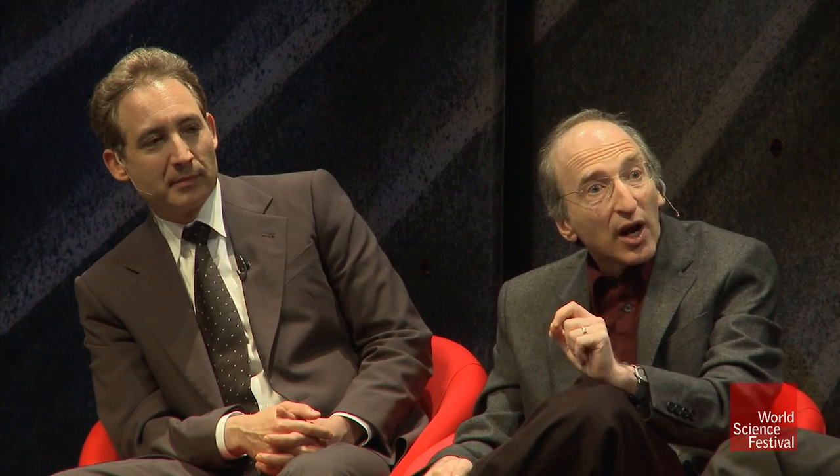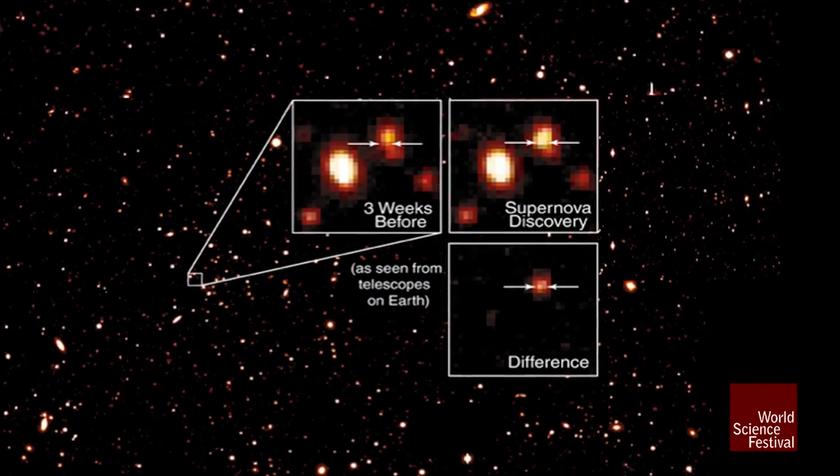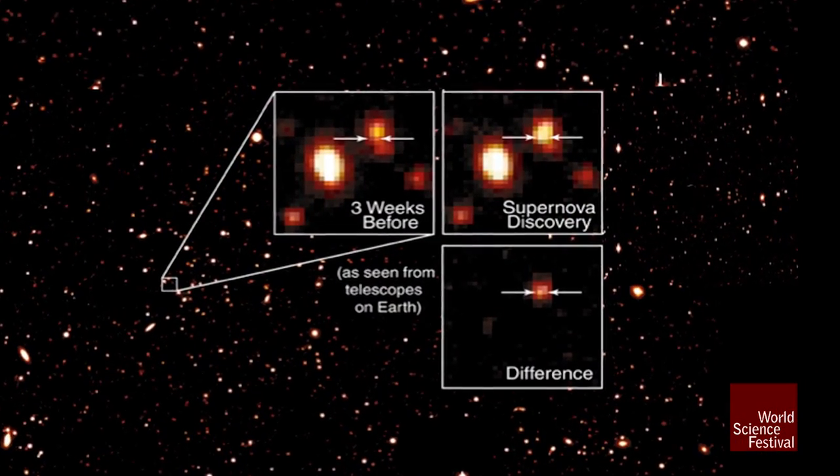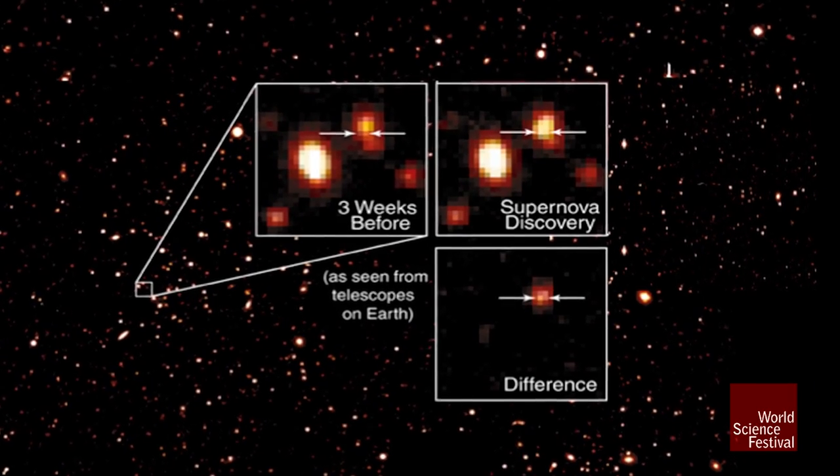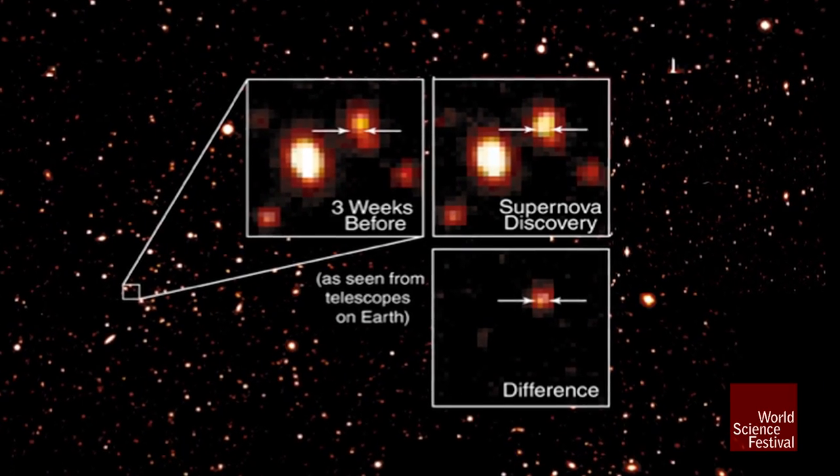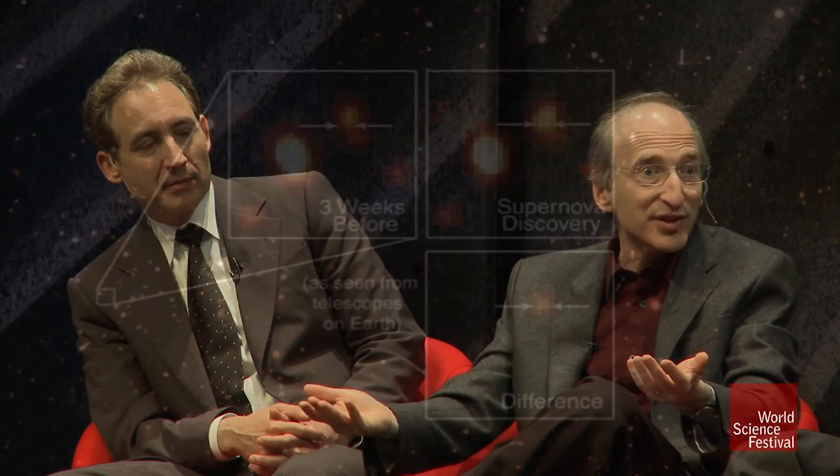Each supernova, when it explodes, you can just read off by how bright it is how far away it is — because this particular kind of supernova are all about the same brightness at peak. If you know how far away it is, you know how far back in time the event occurred, because you know the speed that light has been traveling to reach us. So when one of these things explodes and you measure its brightness, you already know what time it went off — 4 billion years back, 5 billion years back in time.